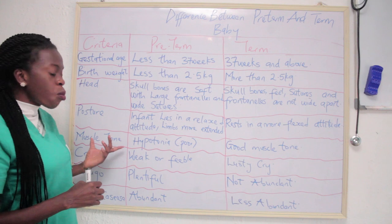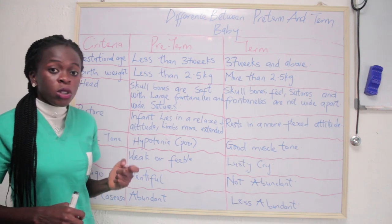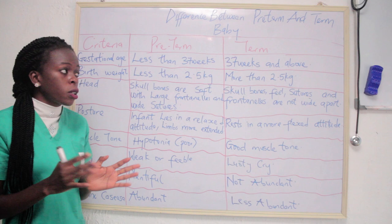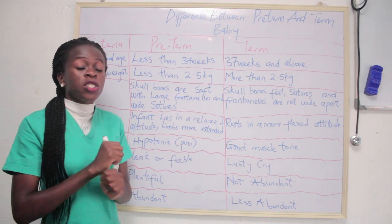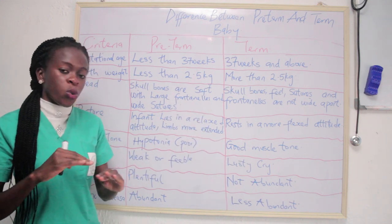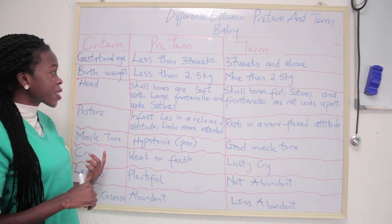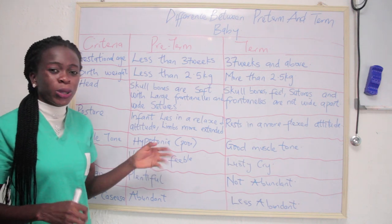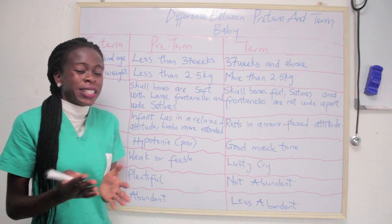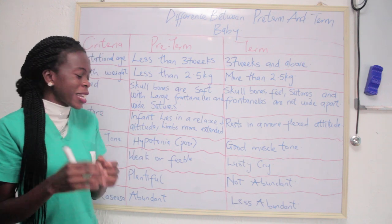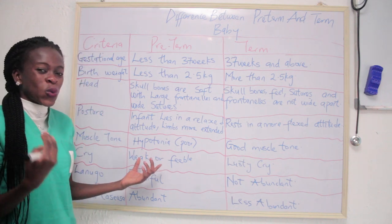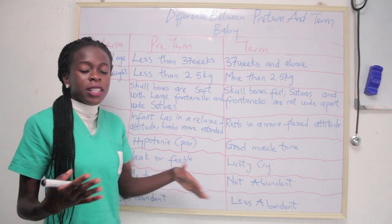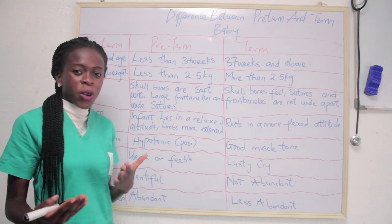For muscle tone, a pre-term baby has poor muscle tone, while a term baby has good muscle tone. In terms of cry, a pre-term baby has a weak or feeble cry — they don't really cry much. For a term baby, you have a lusty, loud cry, which tells you this is a term baby.